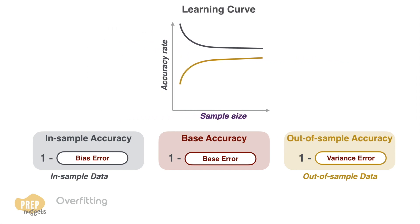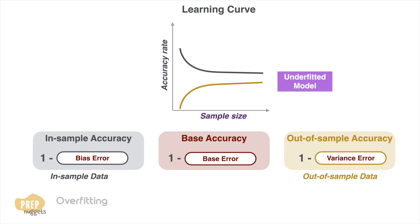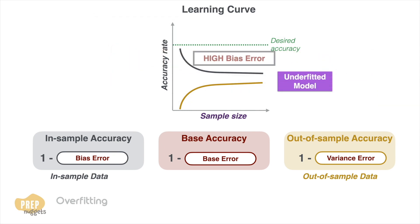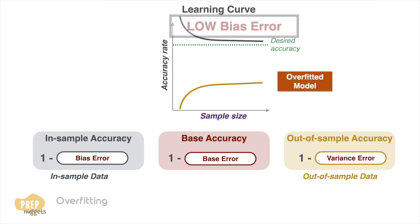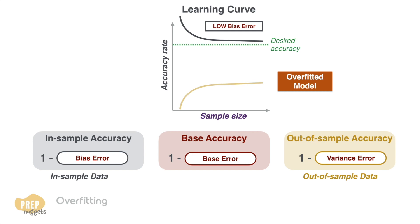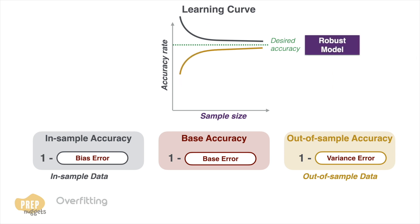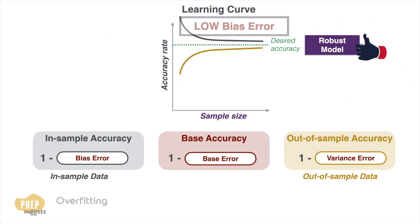A learning curve plots the accuracy rate of the model for out-of-sample data against the accuracy rate for in-sample data. If the model is robust, the two curves should converge toward the base accuracy of the model. However, in the case of an underfitted model, both the in-sample and out-of-sample accuracies are far from the desired accuracy rate because of the high bias error. For an overfitted model, the bias error is low, so the in-sample accuracy may approach the desired accuracy, but the out-of-sample accuracy is low due to high variance error. Only with a robust model will both accuracy rates converge towards the desired rate as the number of samples increases.